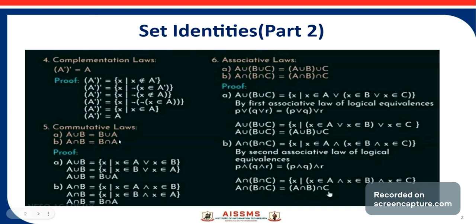This is all about the commutative laws. Next are the associative laws. The first associative law states A union (B union C) is equal to (A union B) union C, and the second is A intersection (B intersection C) is equal to (A intersection B) intersection C.